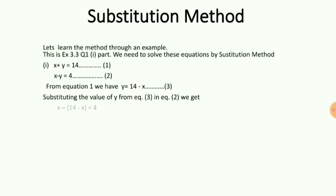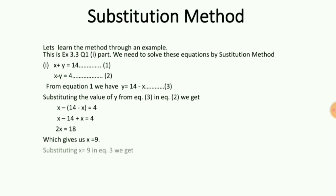Substituting this value of y from equation 3 in equation 2, we get x minus (14 minus x) equal to 4. That gives me x minus 14 plus x equal to 4, that is 2x equal to 18, which gives me x equal to 9. Now, using this value of x equal to 9 in equation 3, we get y equal to 14 minus 9, which gives me y equal to 5. So, the answer is x equal to 9 and y equal to 5.